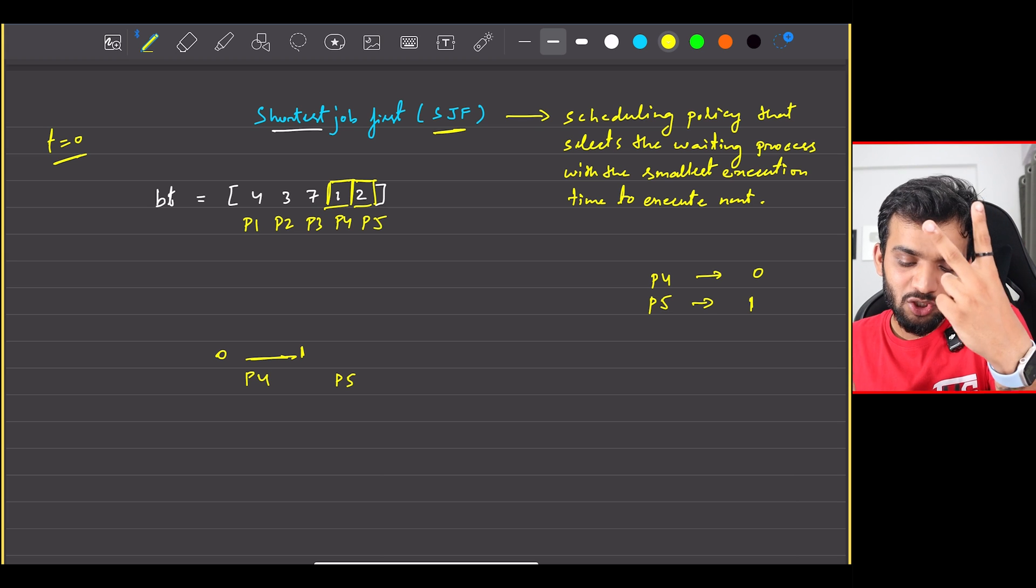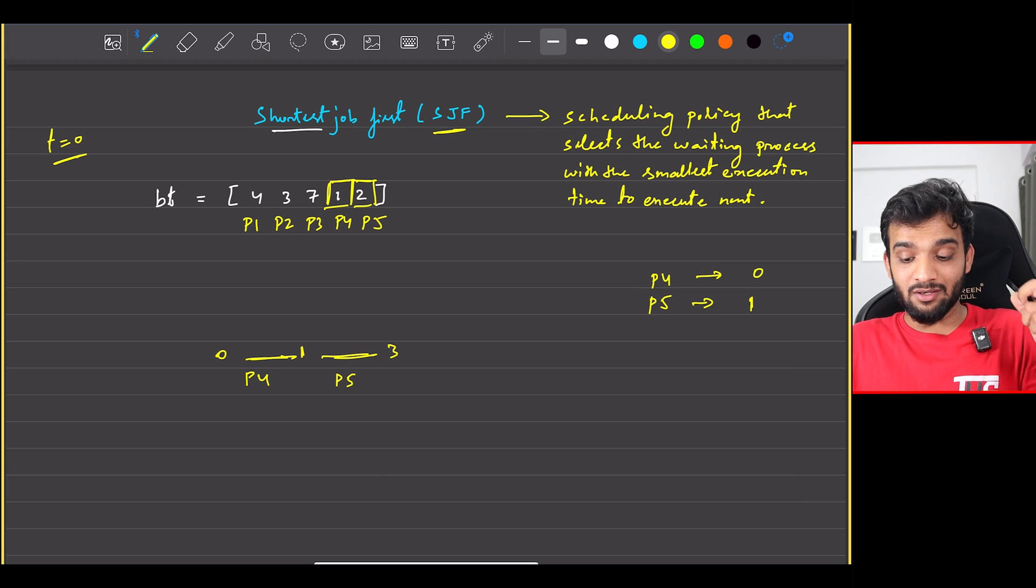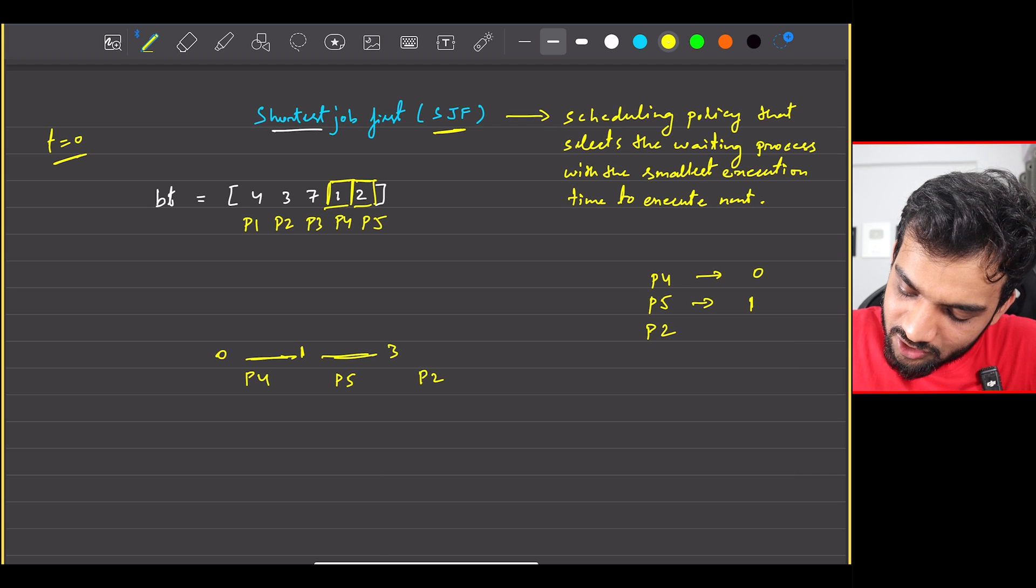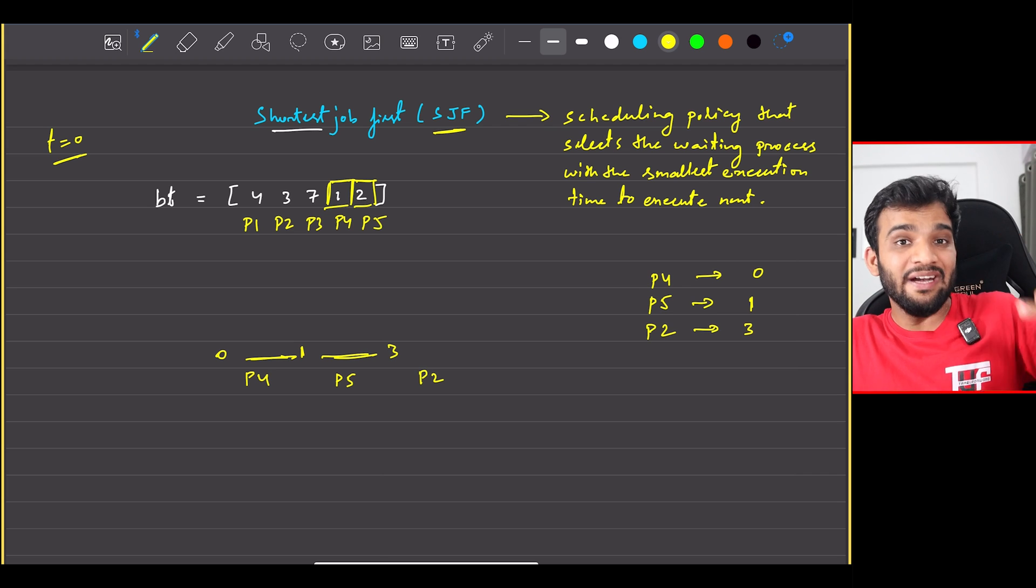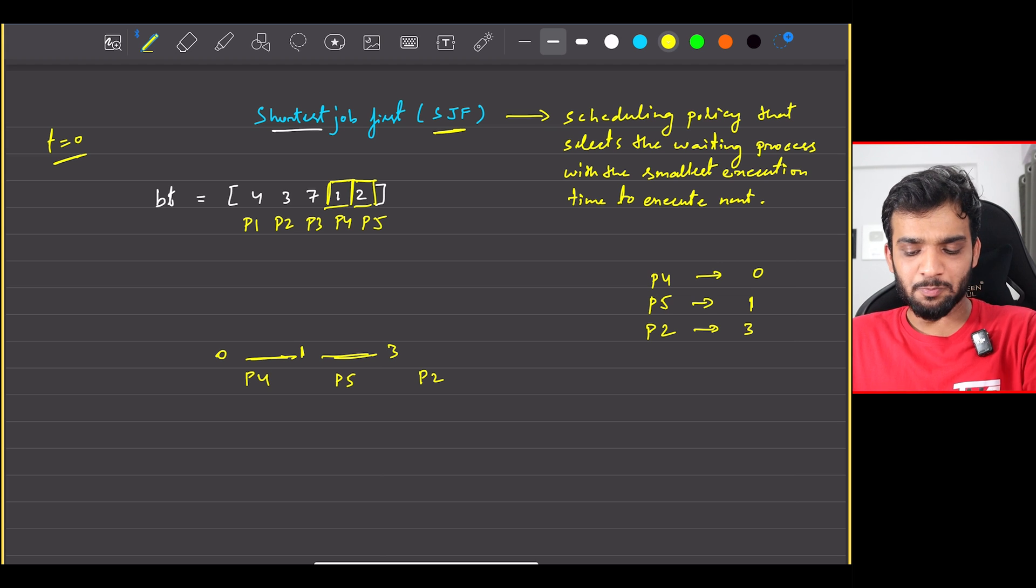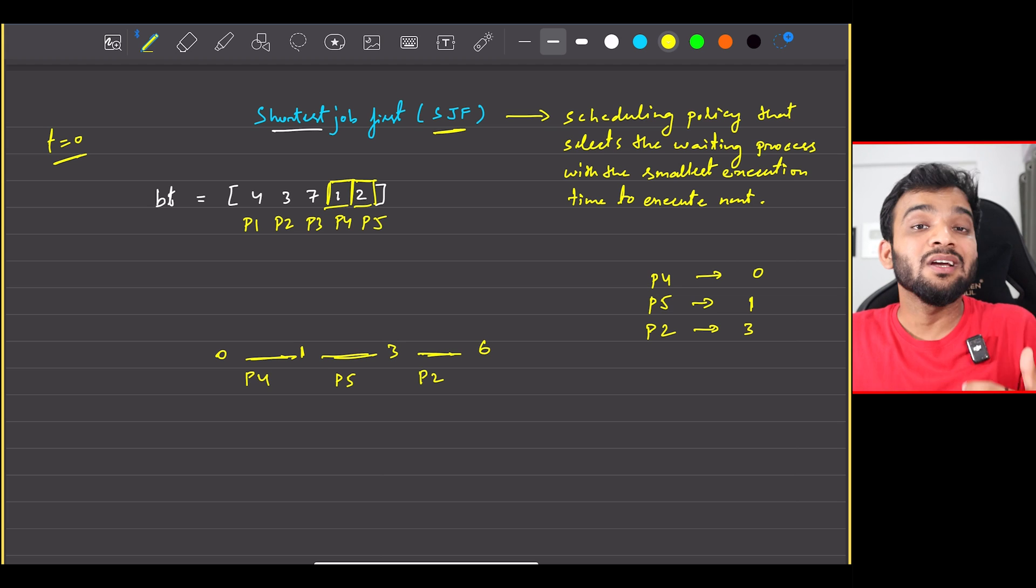It is having an execution time of two, so it's gonna end at three. Perfect. Which one is gonna be the next one? P2. So can I say P2 is starting at three? I can. So the waiting time for P2 is three seconds. Perfect.